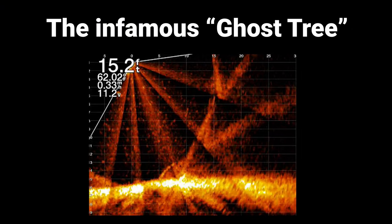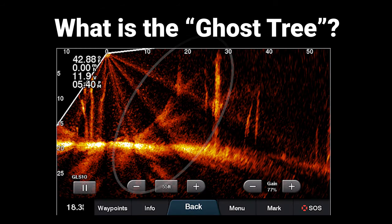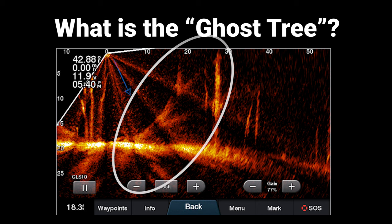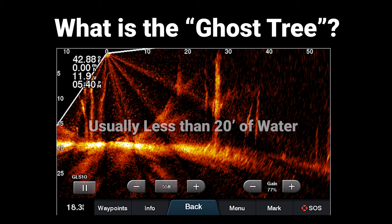The ghost tree is artifacts on the screen that look to resemble what a tree may look like underwater with the LiveScope sonar when it's in forward view. This does not affect down view at all, only in forward view. The ghost tree is caused by reflections of the sonar bouncing off the bottom of the lake and creating interference on the screen. It's most common in shallower water with a hard bottom.